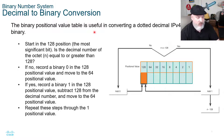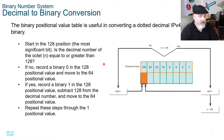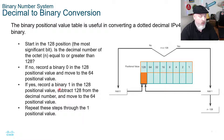The binary positional value table is useful in converting a dotted decimal IPv4 address to binary. You can use this method — it's one method. Here you'd start in the 128th position. The most significant bit: is the decimal number of the octet equal to or greater than 128? If no, you record a binary 0 and move on to the next position, which is 64. If yes, you record a binary 1 in the 128th position, subtract 128 from the decimal value, then move to the 64 position.